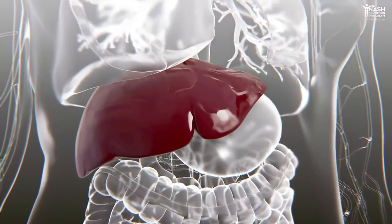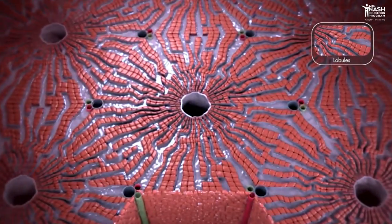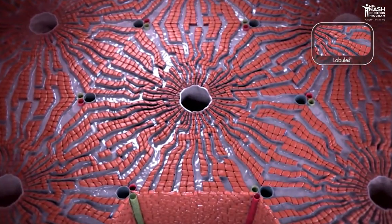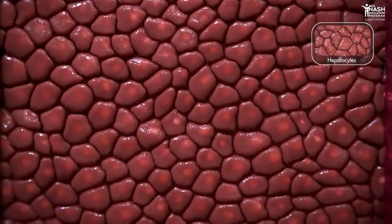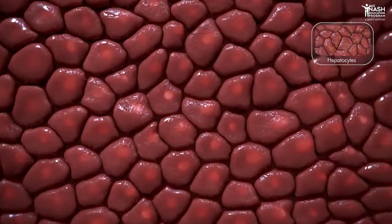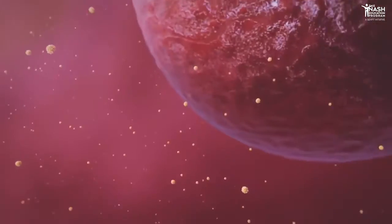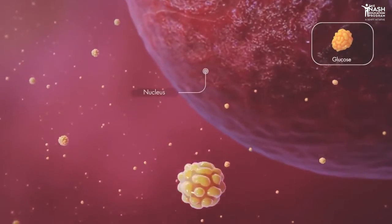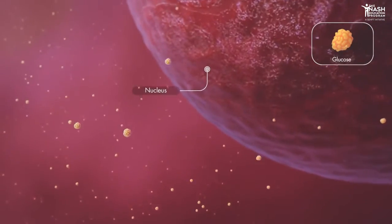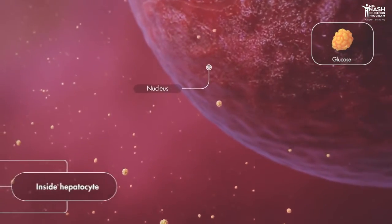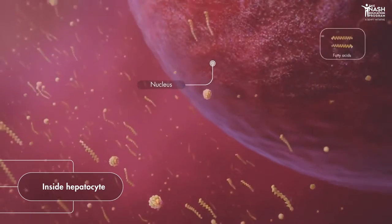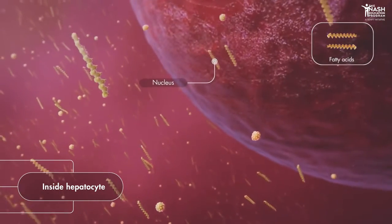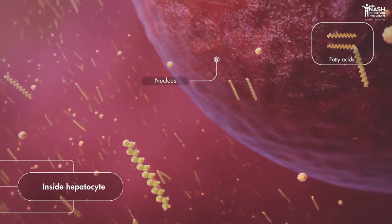The liver carries out many vital functions, including nutrient metabolism carried out by specialized cells called hepatocytes. For example, when excess glucose is present within the hepatocyte, it can be transformed into fatty acids, known as de novo synthesis.